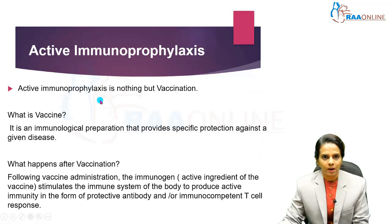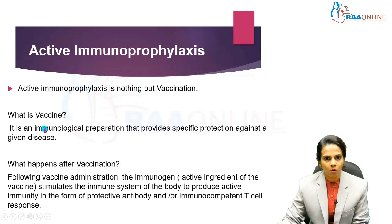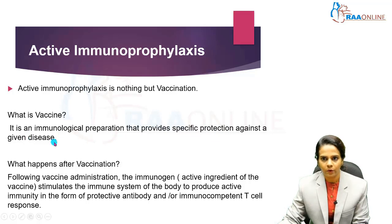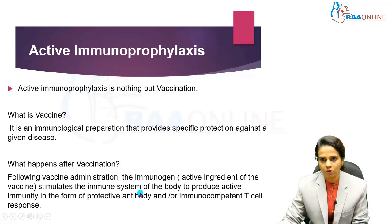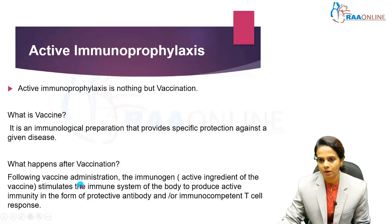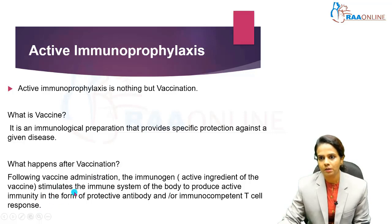Active immunoprophylaxis is nothing but vaccination. What is a vaccine? It is an immunological preparation that provides specific protection against a given disease. Following vaccine administration, the immunogen — that is, the active ingredient of the vaccine — stimulates the immune system of the body to produce active immunity in the form of either protective antibody or immunocompetent T cell response.